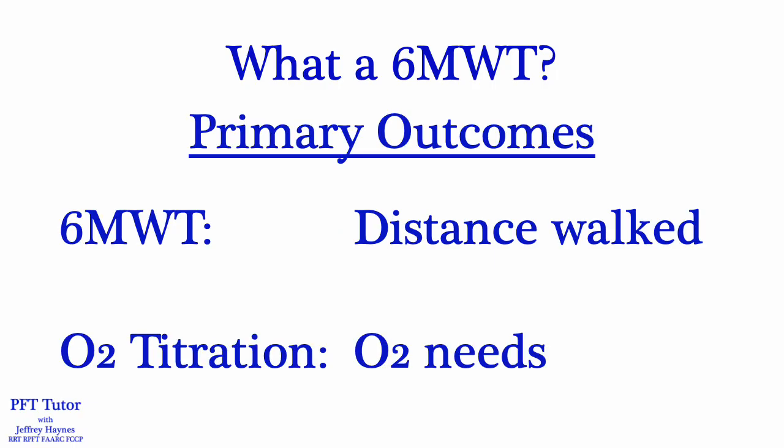The primary outcome of a 6-minute walk test is the distance walked in meters over 6 minutes, whereas the primary outcome of an oxygen titration test is to determine whether or not a patient is a candidate for oxygen therapy, and if so, how much do they need.